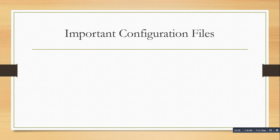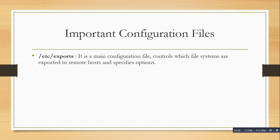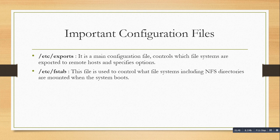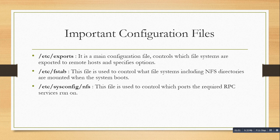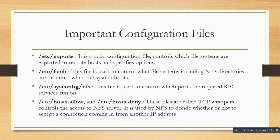The important configuration files: the /etc/exports file is the main configuration file — it controls which file systems are exported to remote hosts and specifies options. The /etc/fstab file is used to control what file systems, including NFS directories, are mounted when the system boots. The /etc/sysconfig/nfs file controls which ports the required RPC services run on. The /etc/hosts.allow and /etc/hosts.deny files, called TCP wrappers, control access to the NFS server and decide whether to accept incoming connections from another IP.